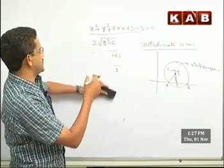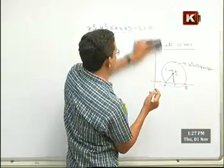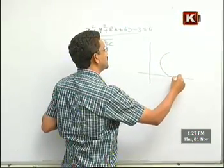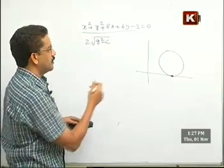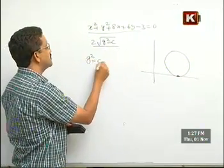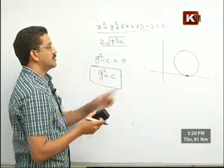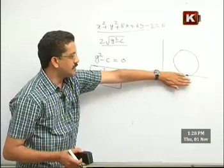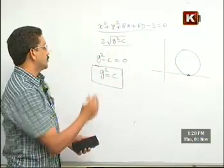In case the circle touches the x-axis — if it is just touching at one point, there is no chord. The length of the chord is 0, so g² − c = 0, meaning g² = c. This is the condition for any circle to touch the x-axis. If a circle is touching the x-axis, its g² value will be exactly equal to c.